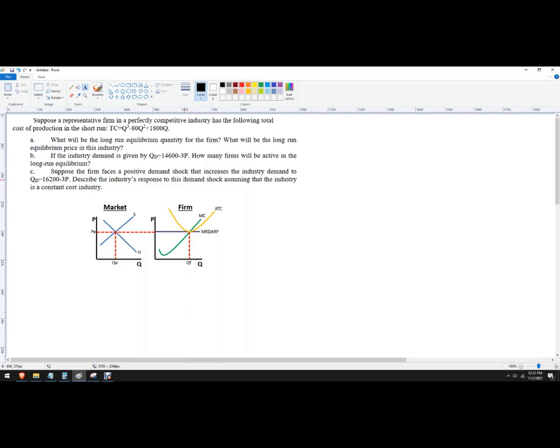We're in perfect competition. We need to know what the long run quantity for the firm is, what the long run equilibrium price is, and then we're given industry demand. We need to know how many firms, if they are identical. So we're supposed to assume these firms are identical.